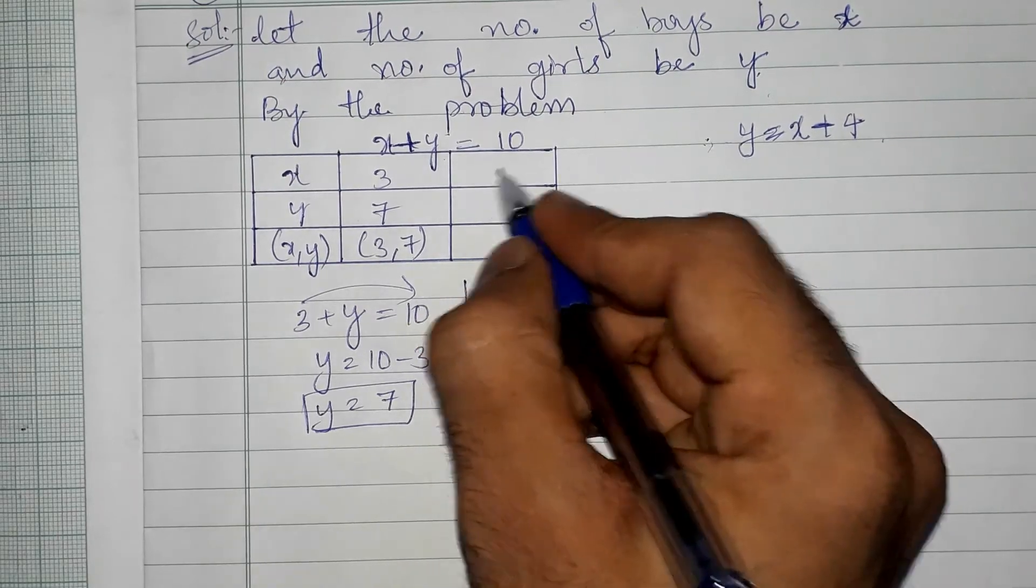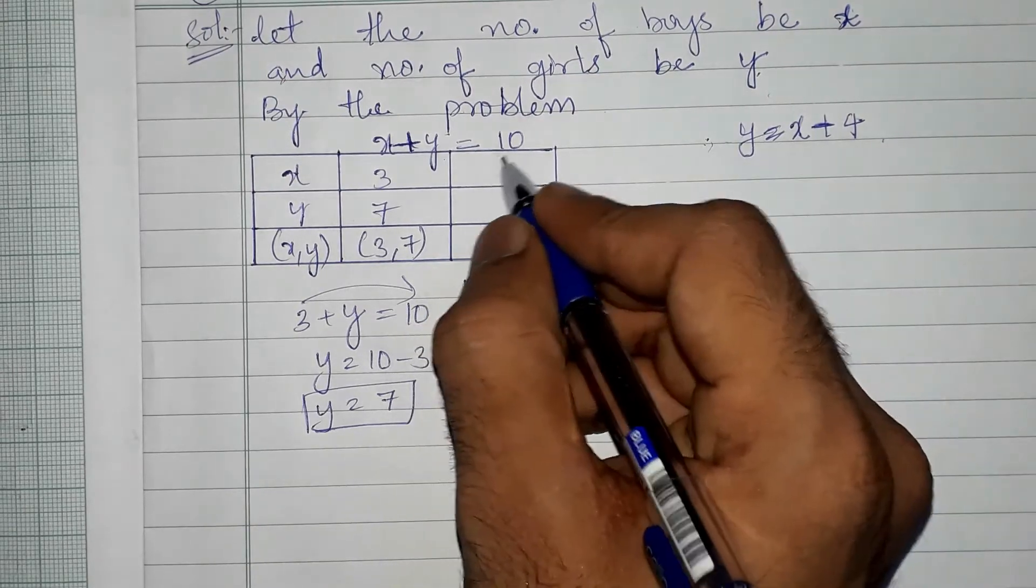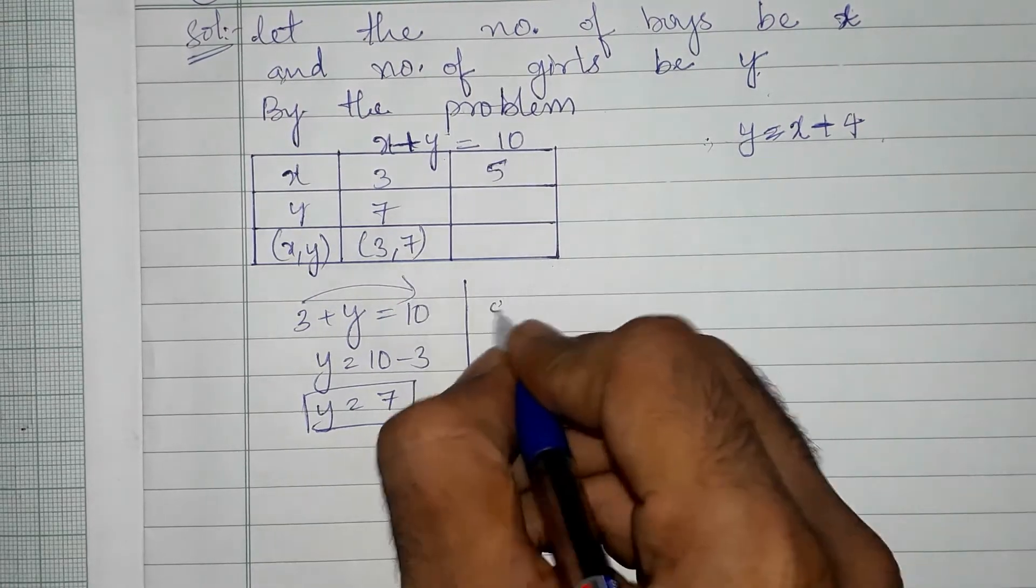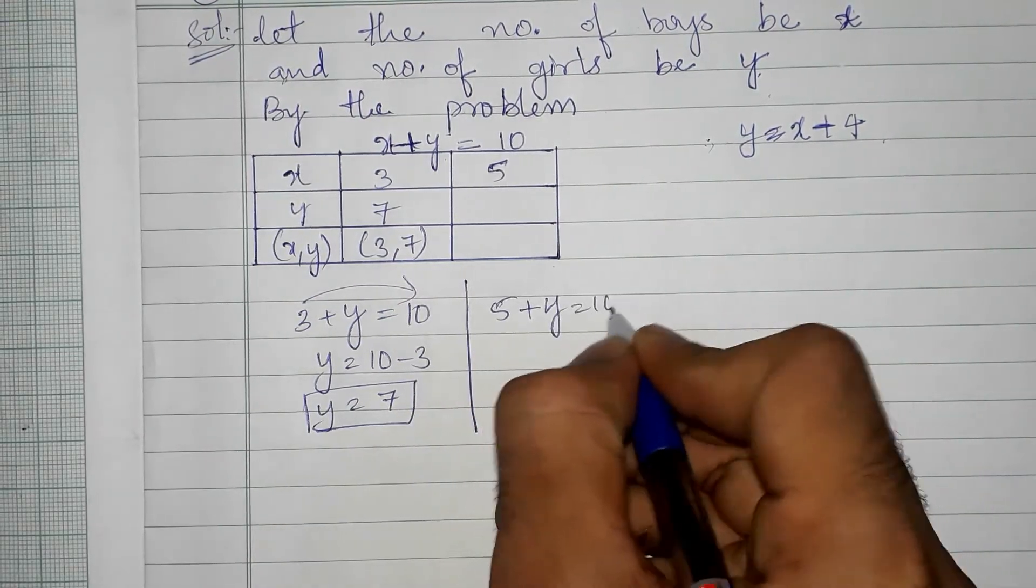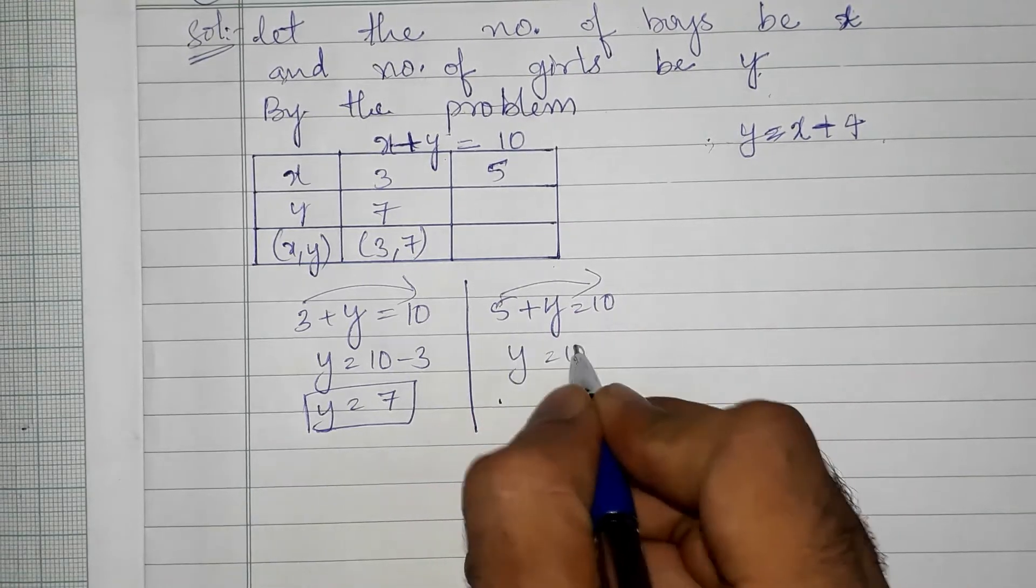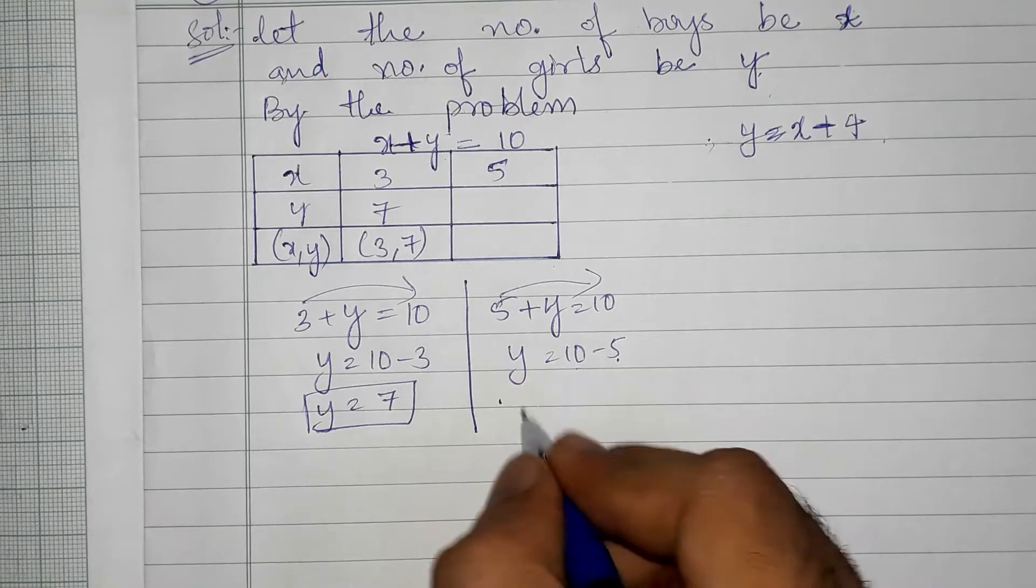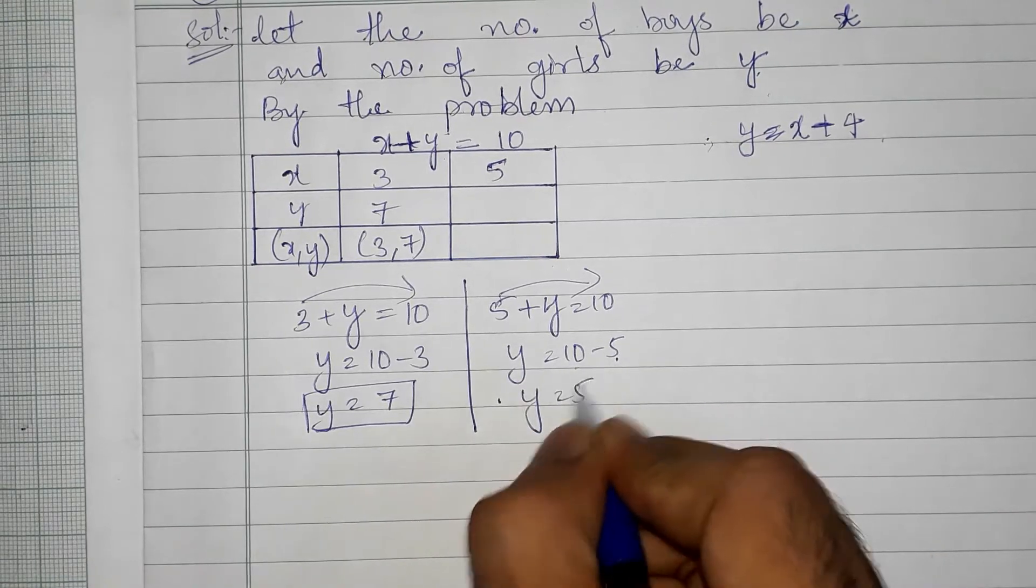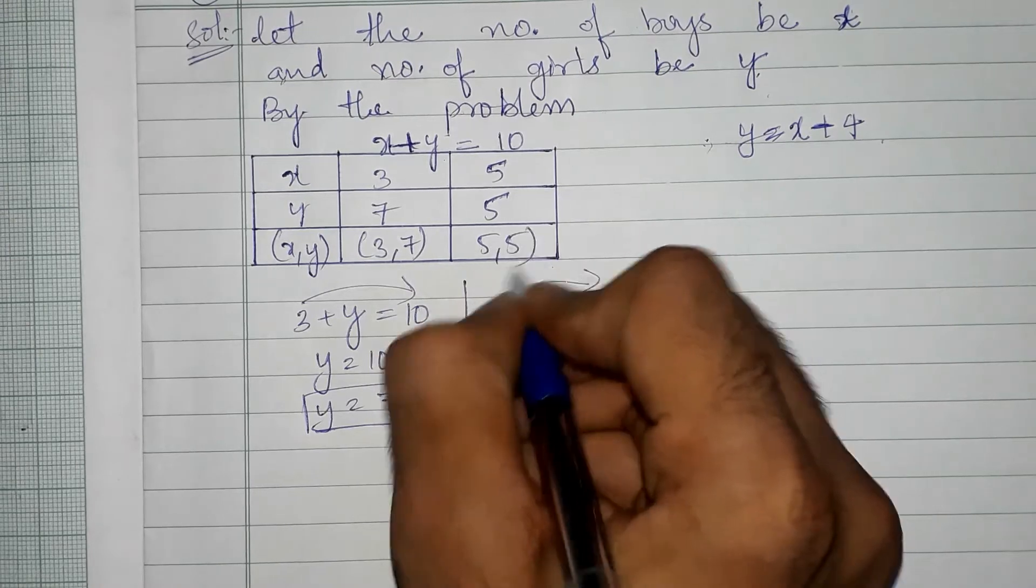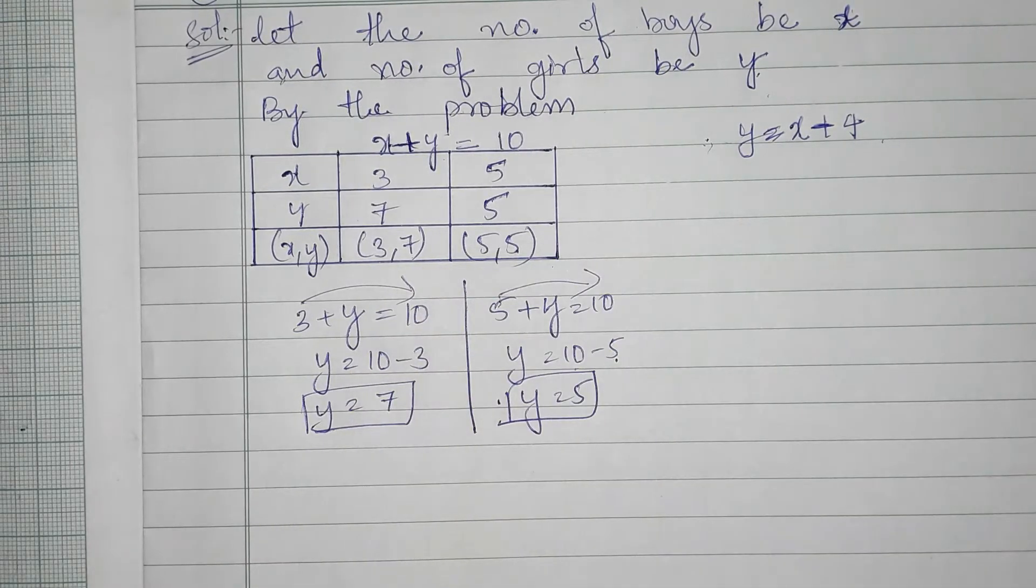Next we can take any number like 4 or 5. So if we are taking 5 in place of x, so 5 plus y is equals to 10, 5 goes to that side, y is equals to 10 minus 5, so y equals 5. So 5 comma 5.